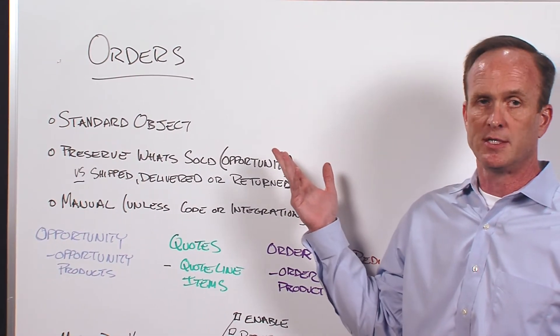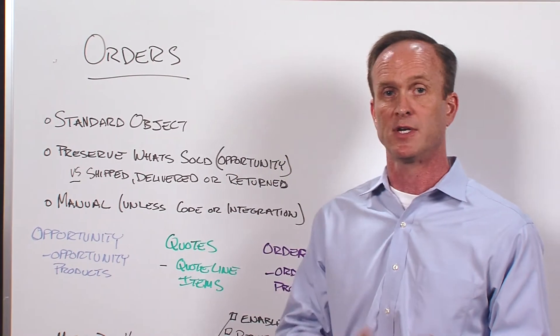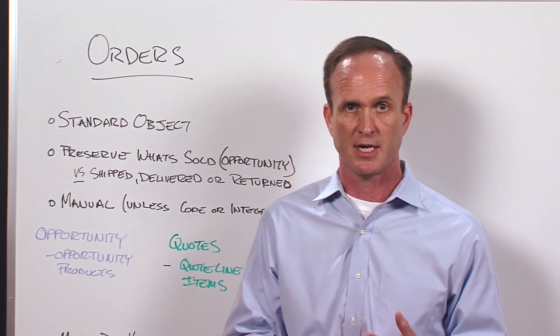Orders is a standard object, just like accounts, contacts, and opportunities. Being a standard object, we can have custom fields, page layouts, record types, and validation rules.